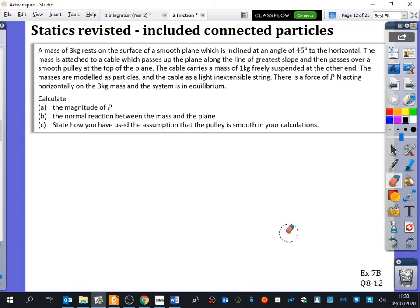So we've got all of these different scenarios here and we're going to try and just recap some of the ideas from year 12 and possibly just add in the fact that we've got something that's now acting at an angle. So it says a mass of three kilograms rests on the surface of a smooth plane, which is inclined at 45 degrees to the horizontal. The mass is attached to a cable which passes up the plane along the line of greatest slope and then passes over a smooth pulley at the top of the plane. The cable carries a mass of one kilogram freely suspended at the other end.